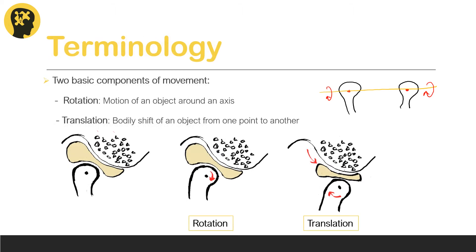Let's discuss a few basic things first. The mandible is capable of movement in all three planes, and each of these movements has a rotation component and a translation component. Rotation is the movement of an object about an axis, and translation is the bodily shift of an object from one point to another.